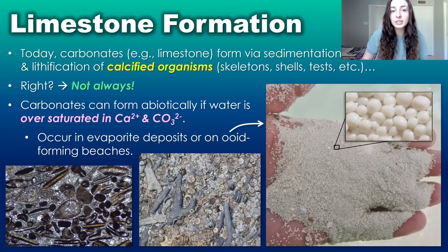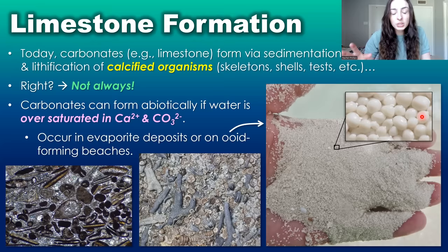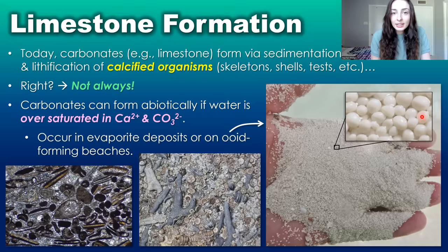It can also form abiotically in ooid-forming beaches. Ooids are calcium carbonate-coated grains that are very smooth and beautiful, almost like pearls, but they form completely abiogenically. It's just that these grains roll around on a warm and shallow beach, and as they roll around with the waves moving them back and forth, they become coated in calcium carbonate because that warm shallow water is already very saturated with calcium and carbonate ions.